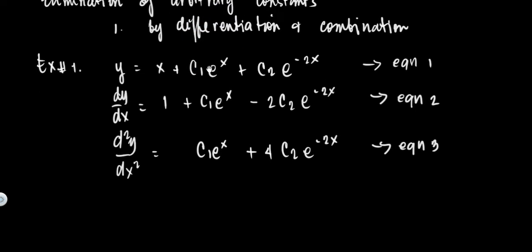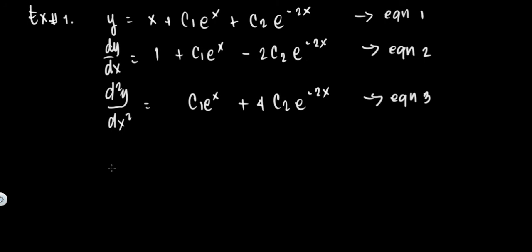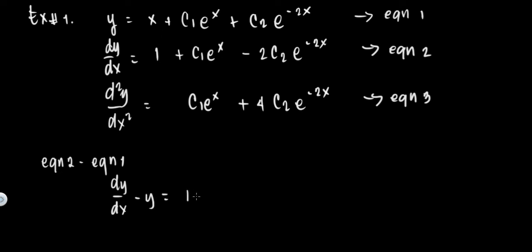To eliminate c1*e^x, let's subtract equation 1 from equation 2 (equation 2 minus equation 1). So dy/dx minus y equals (1 - x), c1*e^x minus c1*e^x is zero, then -2c2*e^(-2x) minus c2*e^(-2x) is -3c2*e^(-2x). Let's call this equation 4.